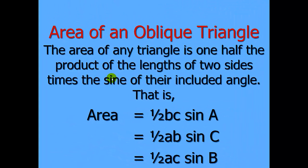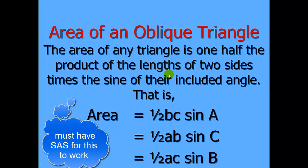The area of any triangle is one-half the product of the lengths of any two sides times the sine of their included angle. You must have two sides and their included angle — that's SAS — for this to work. And depending on how you draw the altitude or what angle you're using, you can use any of the three angles as long as you have their included sides.